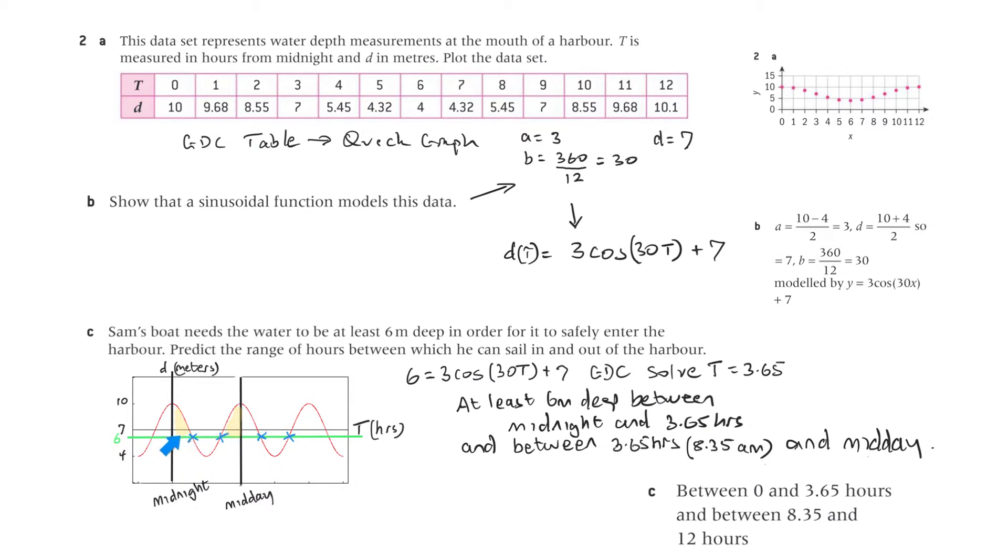That's the time there, and then this one here is also 3.65. That's 3.65 from midnight, that is 3.65 before midday, that's 3.65 after midday, and this would be 3.65 before midnight. So at least 6 metres deep, we'll consider that one and that one there, between midnight and 3.65 hours. You can see that's at least 6 metres deep in that period, and also from 3.65 hours before midday to midday. And that would be from 8.35 a.m. and midday, between there and there. And that's the answer from the back of the book, and that matches that. That's midnight to 3.65 hours, and between 8.35 and 12 hours, that's from there to there, and you can see that's above 6 metres.